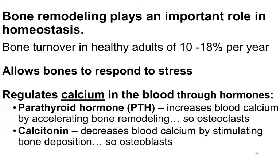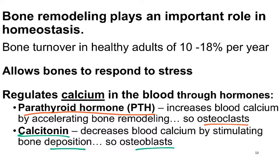Blood calcium is regulated through parathyroid hormone, which acts on osteoclasts. It's responsible for increasing blood calcium when blood calcium gets too low. Calcitonin decreases blood calcium when it's high, and it does that by stimulating deposition of bone — so you can associate that with osteoblasts.